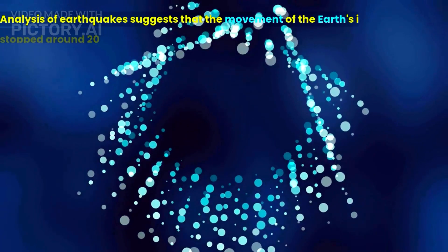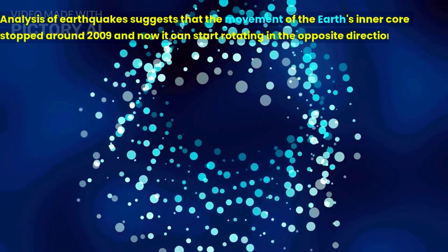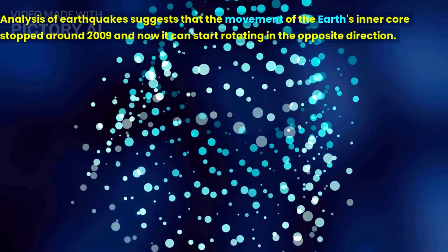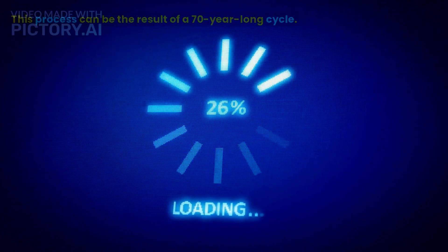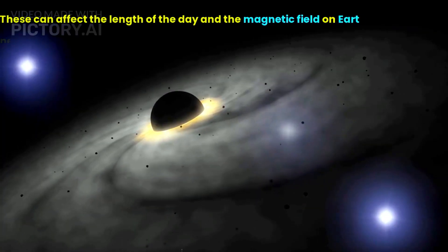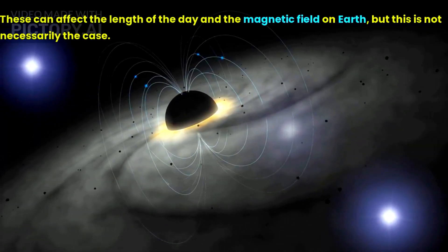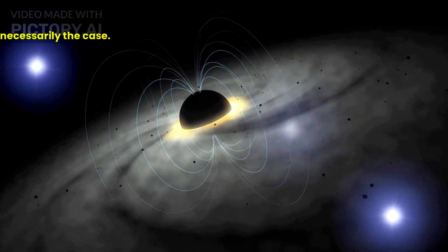Analysis of earthquakes suggests that the movement of the earth's inner core stopped around 2009 and now it can start rotating in the opposite direction. This process can be the result of a 70-year-long cycle. These can affect the length of the day and the magnetic field on earth, but this is not necessarily the case.